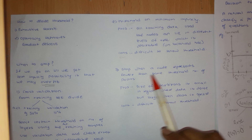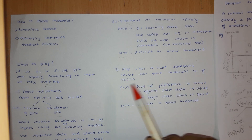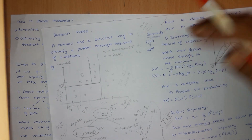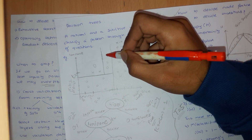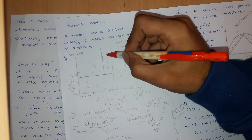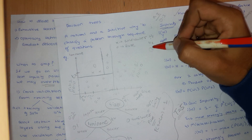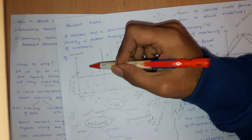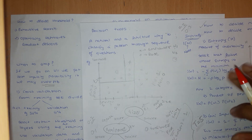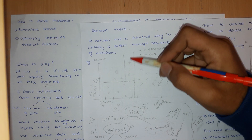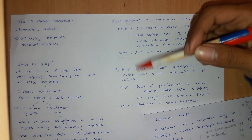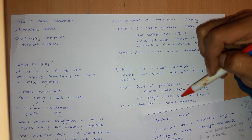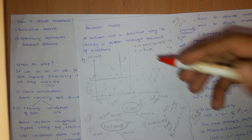Similarly, you can stop when a node represents fewer than a threshold number of points. Instead of defining a threshold on impurity, you define a threshold on the number of misclassified points. Say only two points should be misclassified — if you have only one point on each side you stop there. Pro: the size of partitions is small in regions where the data is dense but large when the data is sparse.